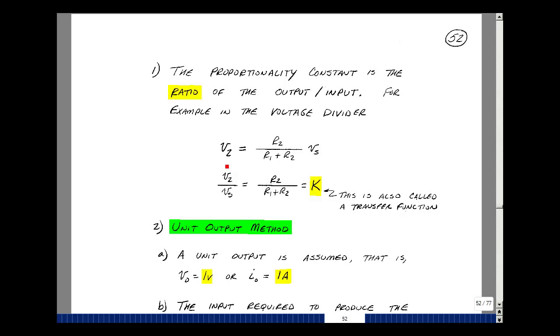The output voltage we call V2 is equal to R2 over R1 plus R2 times V sub s when we introduced the voltage divider in the last chapter. If we divide through by V sub s, the ratio of the output to the input is just R2 over R1 plus R2. That's our proportionality constant. We'll also call this the transfer function in ECE 202.